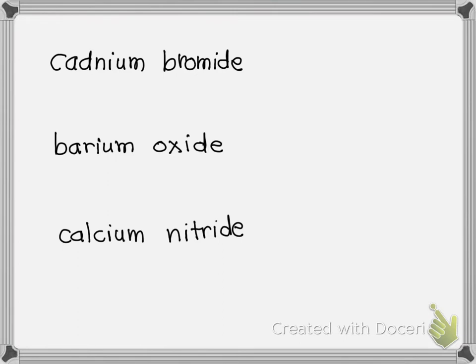All right. So when you're given the names of the elements and you're asked to get the formulas, we identify this as an ionic compound because it has a metal and a non-metal. And the only way to get the formula is to know the charges.